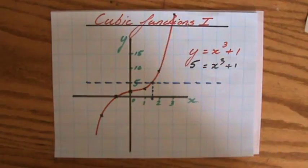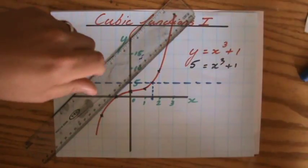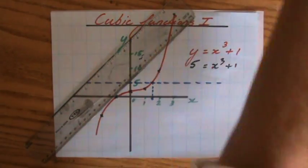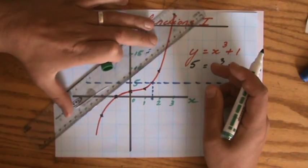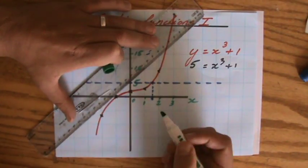x minus 1 is over here. So I'm going to take really good care. I'll do it in green. Now, this is really important that you do this accurately.